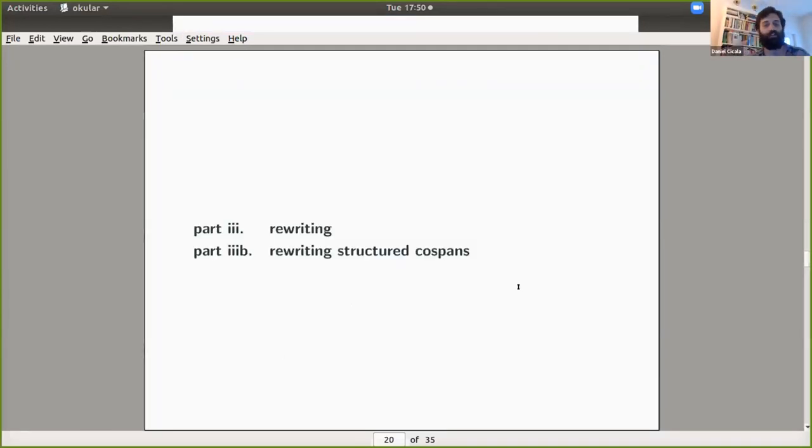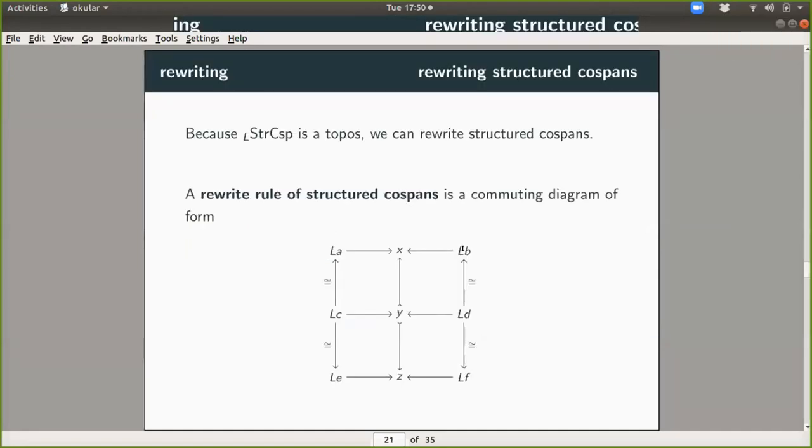And what this means is that some object G can be rewritten into another object H by applying a sequence. So that's rewriting by itself, but I want to get structured cospans into the mix. And so this introduces the added difficulty of compositionality that we need to consider. And so fortunately our category of structured cospans where they're considered objects is in fact a topos.